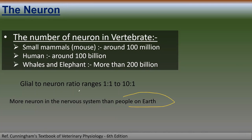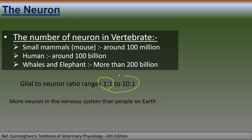When we look at the glial to neuronal ratio, it ranges from 1:1 to 10:1. So that is the range for the glial to neuronal ratio.